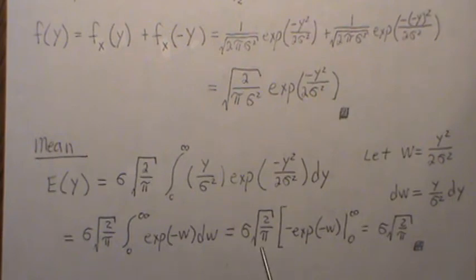To integrate this, we get negative exponential negative w. Limits from zero to infinity. You plug in infinity, this goes to zero. Plug in one, it's one. But the minus and the minus cancel. And we just get this piece out here. So this is the mean of a half normal distribution.